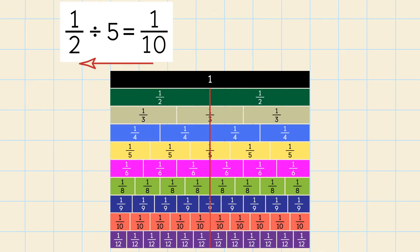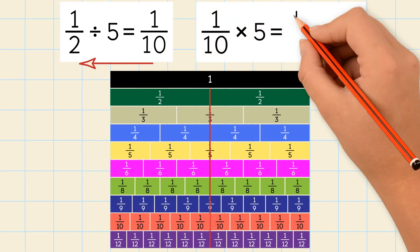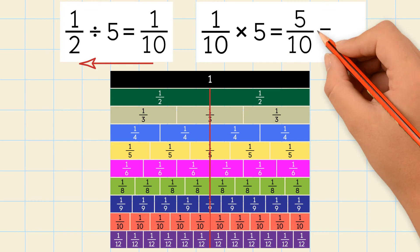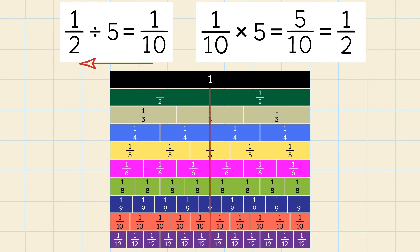Let's use the inverse operation to check our answer. 1 tenth times 5. We get 5 over 10. We simplify to get 1 half. So our answer was correct.